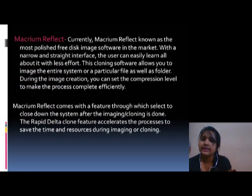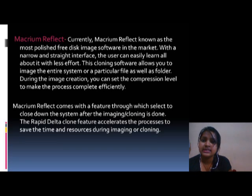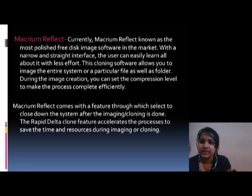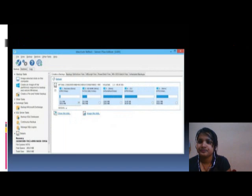Macrium Reflect is known as the most polished disk image software in the market, with a clean and straightforward interface. The user can easily learn all about it with less effort. The cloning software allows you to image the entire system or a particular file as well as a folder. During image creation, you can set the compression level to make the process complete efficiently. Macrium Reflect comes with a feature that shuts down the system after the imaging or cloning is done. The rapid delta clone feature accelerates the process to save time and resources during imaging or cloning.